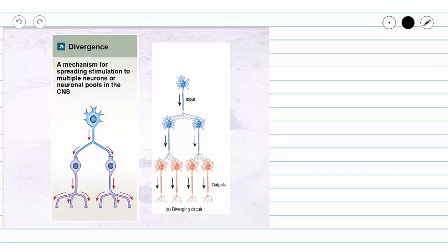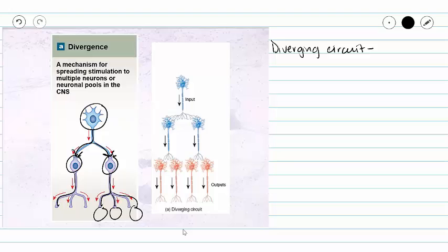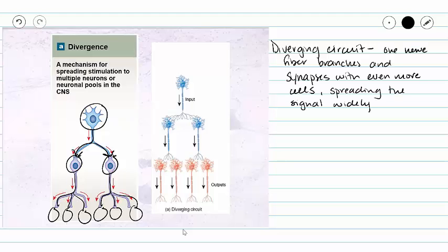Our first circuit is a diverging circuit. In a diverging circuit, one nerve fiber is going to branch into axon collaterals and synapse with several postsynaptic cells. These postsynaptic cells are going to branch and then connect to many more cells. So at each junction, we are making the number of cells that we communicate with larger.